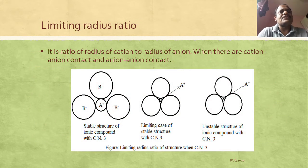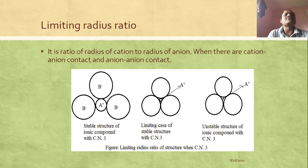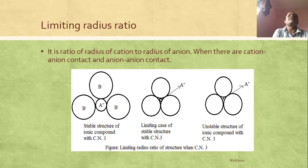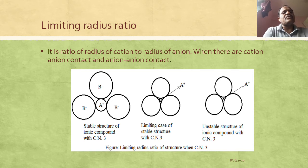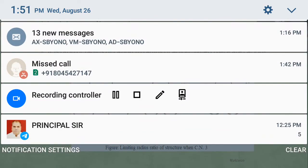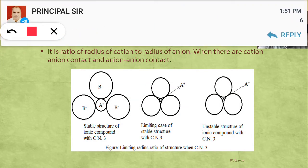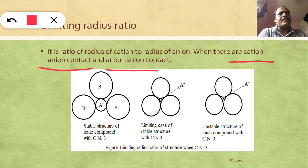Now, the limiting radius ratio is an important concept. The radius ratio has limiting values, and within those limits you can predict the structure of a particular ionic crystal as well as the coordination number of that compound. The limiting radius ratio is the ratio of the radius of the cation to that of the anion, where there must be contact between cation and anion. When cation–anion contact or anion–anion contact occurs, a limiting radius ratio value is obtained.